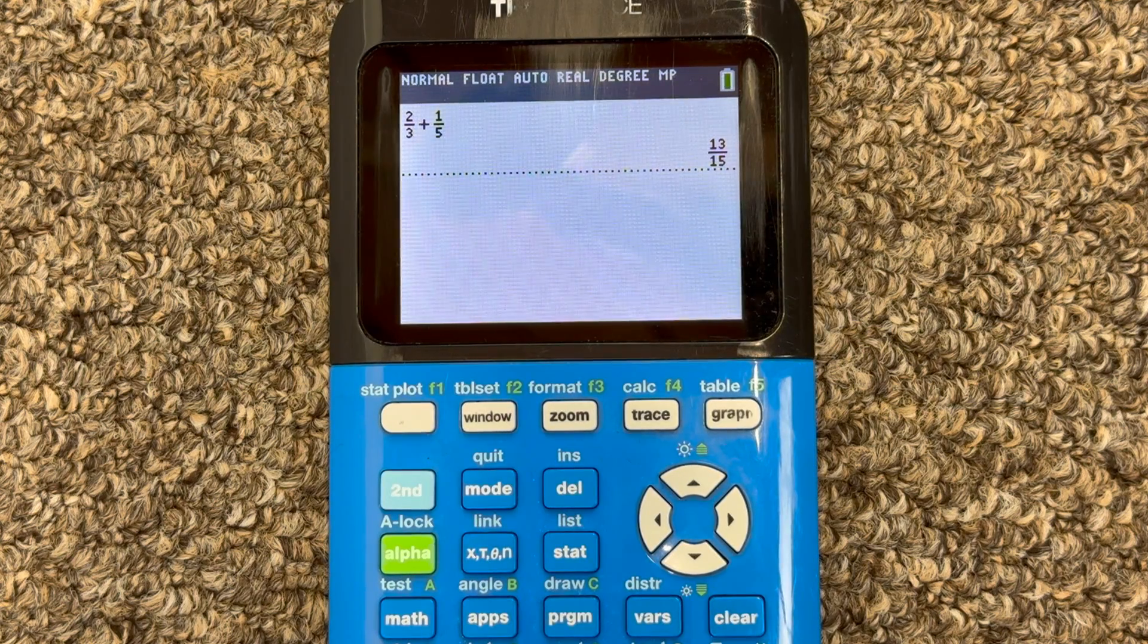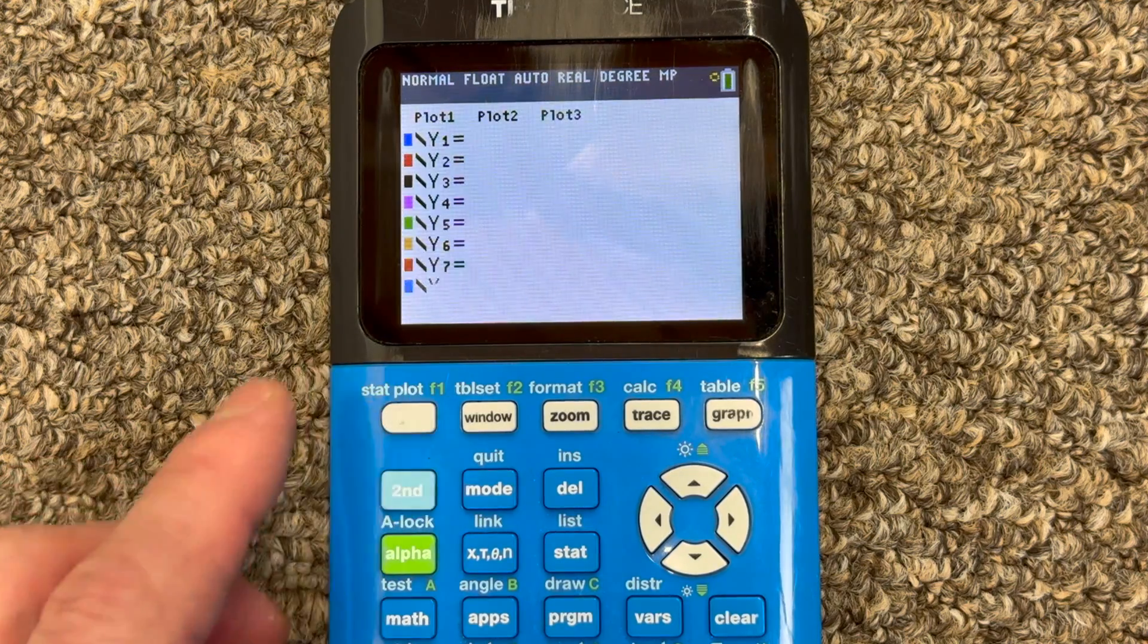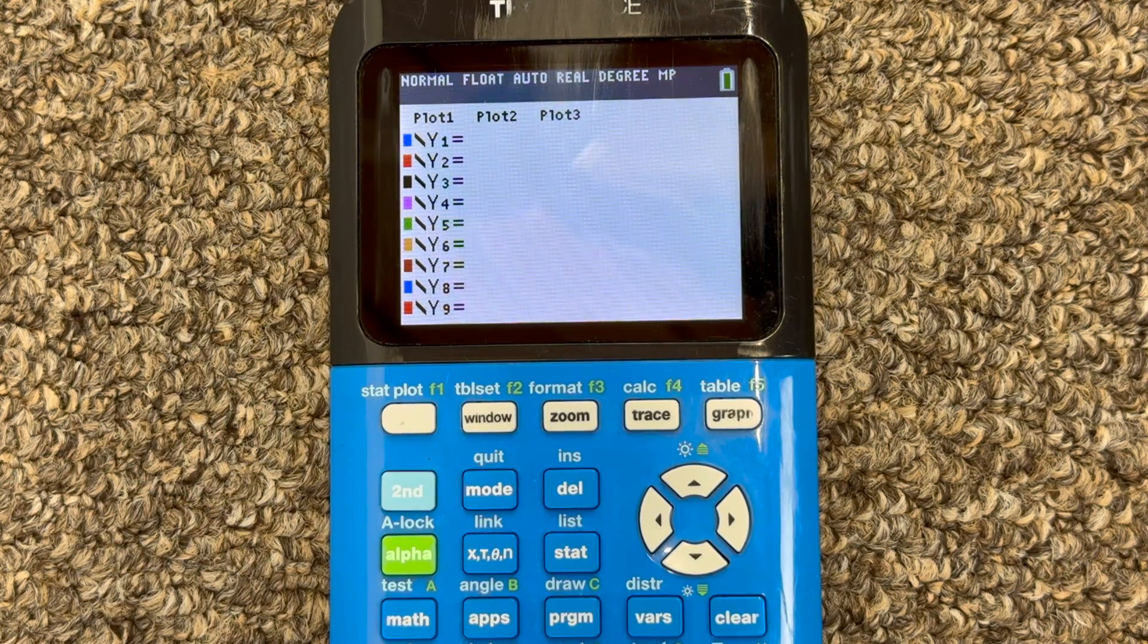Now you can use this fraction feature in other places on the calculator. For example, if we go to Y equals, say we wanted to graph a rational function.